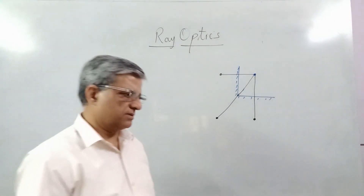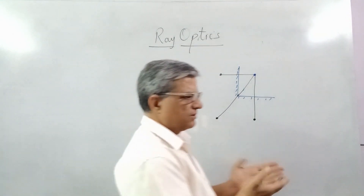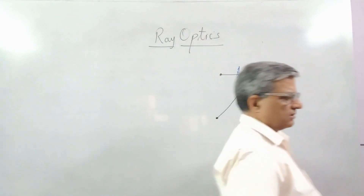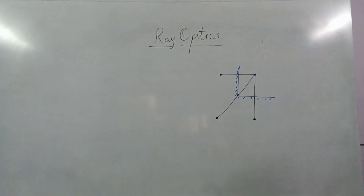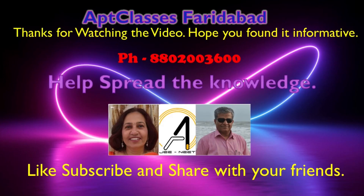If two mirrors are placed at right angles to each other, the two images will produce one blind image — one image, one image.